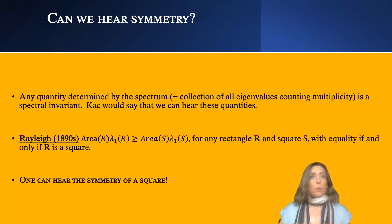So Rayleigh and his contemporaries could prove that if a rectangle and a square have the same spectrum, then in fact the rectangle has to be a square. So we can hear the symmetry of the square if we're listening to rectangles.